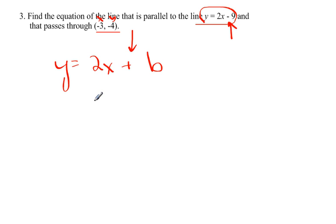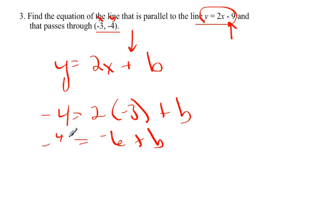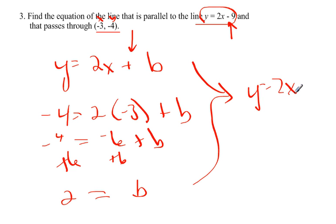There's my x and my y. So plug in the point. 2 times negative 3. This is negative 6. I want to add 6 to both sides. I get b equals 2. So y equals 2x plus 2.